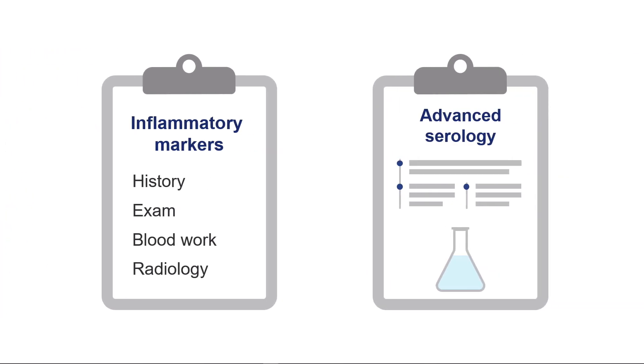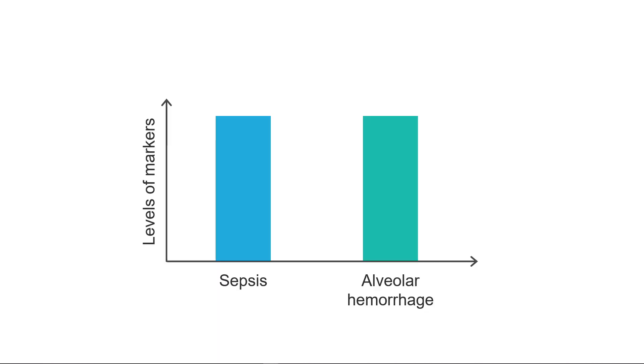Advanced serology is sometimes needed to further identify the etiology. For example, when diffuse alveolar hemorrhage is a consideration, aside from bronchoscopy, inflammatory markers in serology become the most useful test. Elevation of the nonspecific inflammatory markers, like ESR and CRP, is not particularly helpful in this situation.